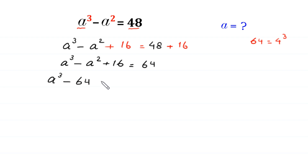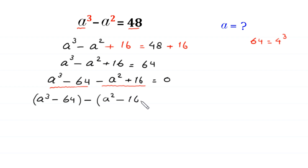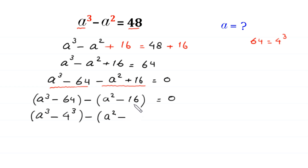Now we move 64 to the left side, so it becomes negative 64. We group the terms: (a cubed minus 64) minus (a squared minus 16) equals 0. Note that 64 is 4 cubed and 16 is 4 squared.